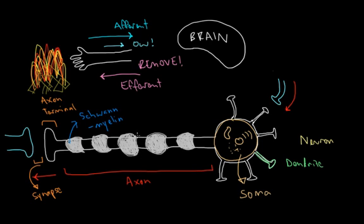These spaces between the Schwann cells are really important as well. They're called nodes of Ranvier, named after the person who discovered them. And these will become important later on when we talk about the propagation of the signal down the axon.